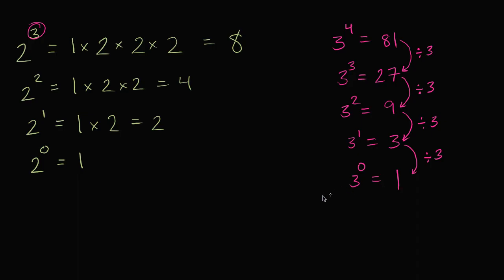Either of those would get you to the conclusion that 2 to the 0 power is 1, or 3 to the 0 power is 1, or frankly any number to the 0 power is 1. So if I have any number, let's say some number a to the 0 power, this is going to be equal to 1.